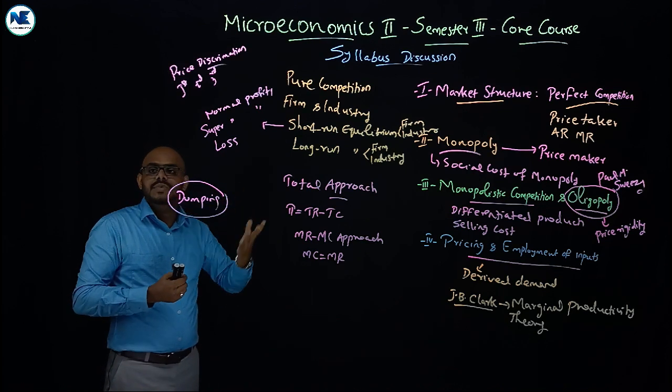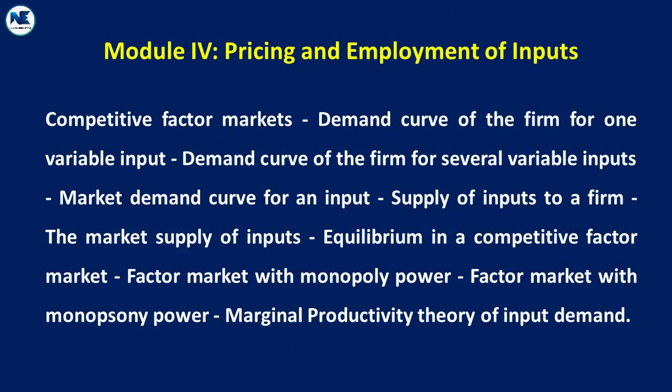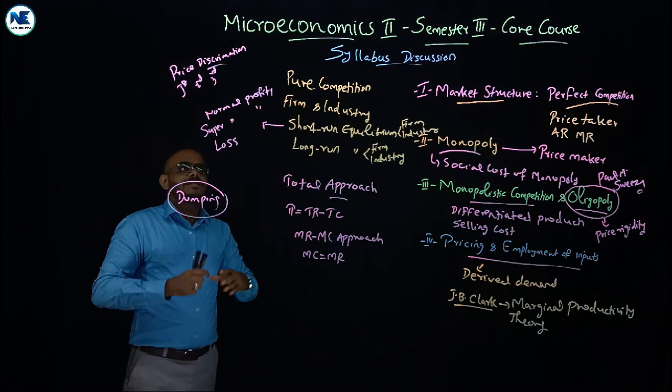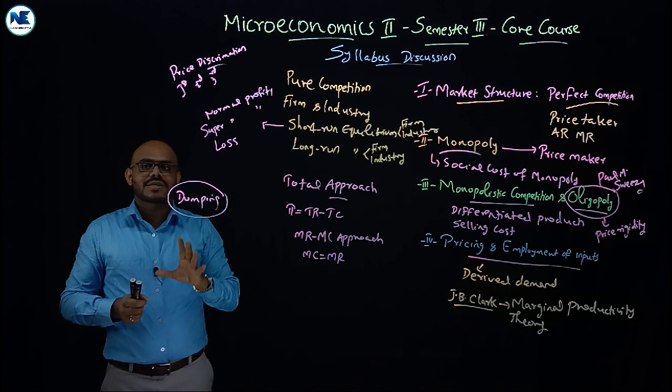Within the fourth module, we focus on the supply of inputs to a firm, the market supply of inputs, and equilibrium in a competitive factor market. We also cover factor markets with monopoly power and factor markets with monopsony power. The marginal productivity theory and the general theory of distribution by J.B. Clark are key areas in the fourth module.